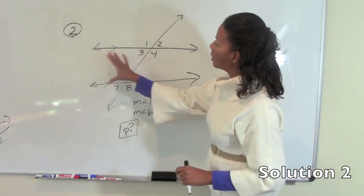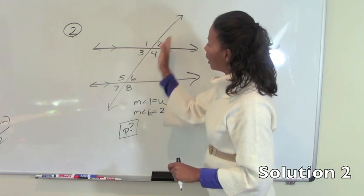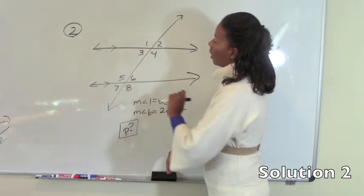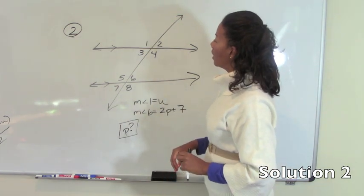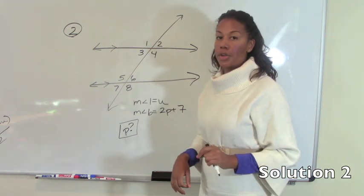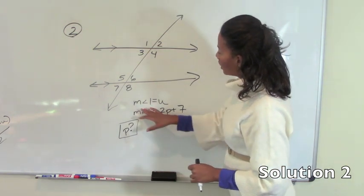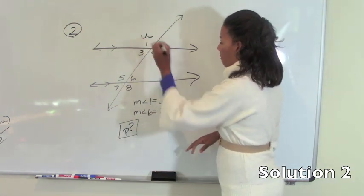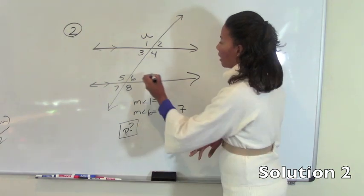So these two parallel lines are cut by a transversal. When parallel lines are cut by a transversal, eight angles are formed. All of the large angles are obtuse and those obtuse angles are all equal, and all of the small angles are acute and those acute angles are all equal. So here we are told that the measure of angle 1 equals u and the measure of angle 6 equals 2p plus 7.